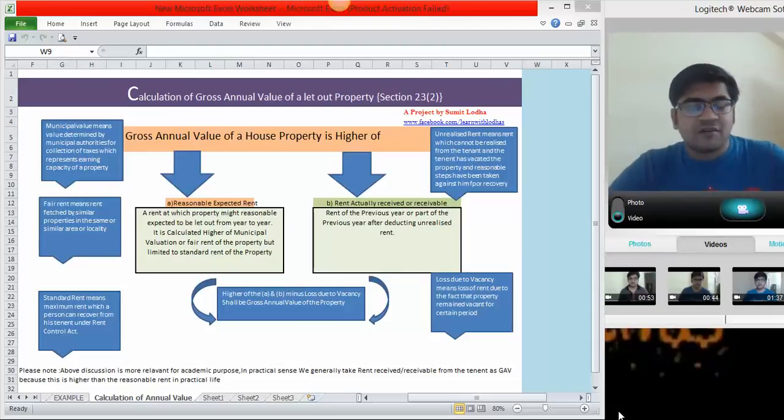First let us understand what is reasonably expected rent. A rent at which a property might reasonably be expected to be let out from year to year basis. I have one property and it can be let out for every year at what rate or what rent, it is called reasonably expected rent. How much you can expect reasonably?